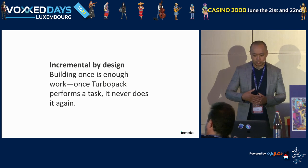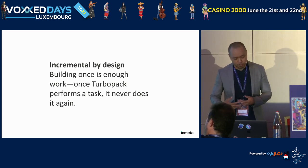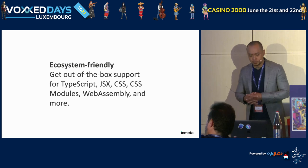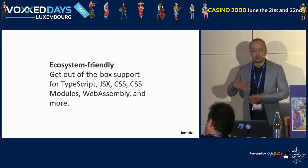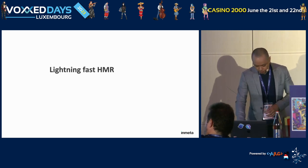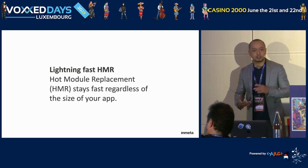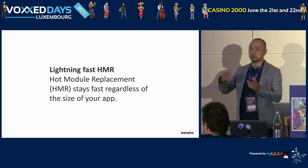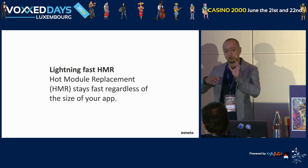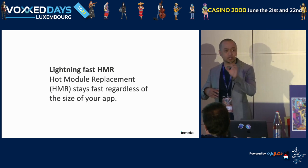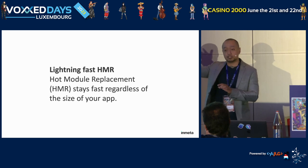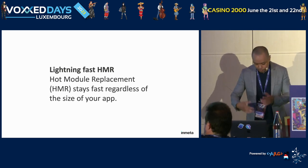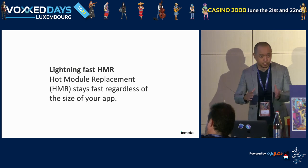Some features of Turbopack: it's smart enough to know which files to rerun. It supports TypeScript, JSX, and WebAssembly out of the box and more. Another feature is faster HMR — Hot Module Replacement — which we use when developing. When you hit Ctrl+S to save a file, you should see the changes on screen right away. That's Hot Module Replacement.